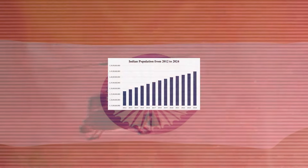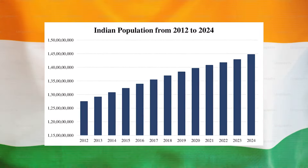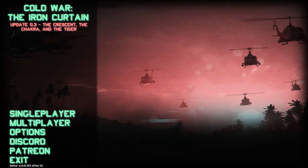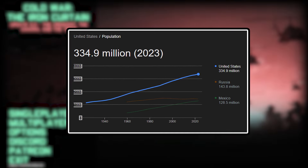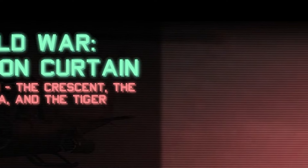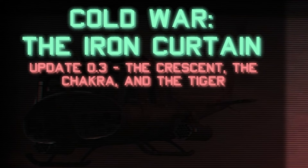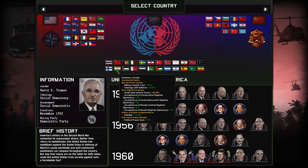Out of all the countries in the world, India is the country with the highest population — nearly 1.4 billion — three or four times more than the United States with a measly 300 odd million. But even with such a big population, India is not the wealthiest country in the world. So I'm gonna change history. Today we're hopping into the Cold War Iron Curtain mod, playing in the 1949 start date as the nation of India.